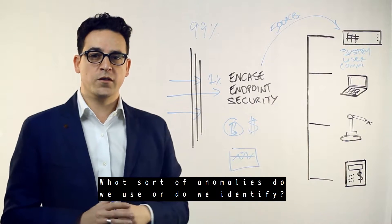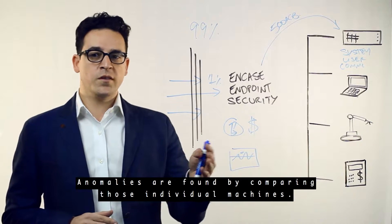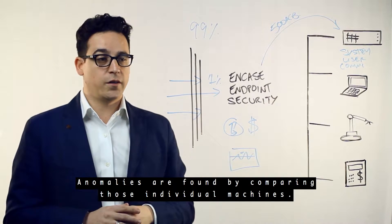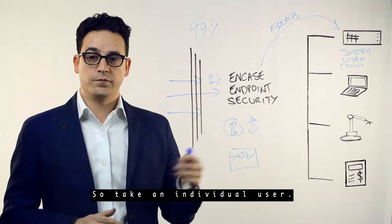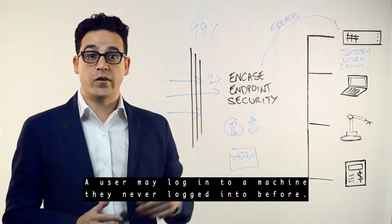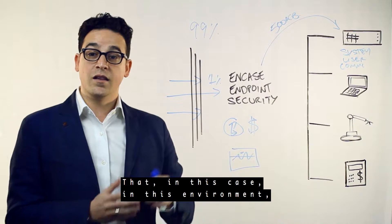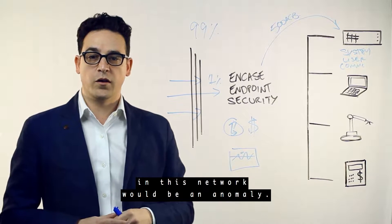What sort of anomalies do we identify? Anomalies are found by comparing those individual machines. Take an individual user. A user may log into a machine they've never logged into before. That, in this case, in this environment in this network would be an anomaly.